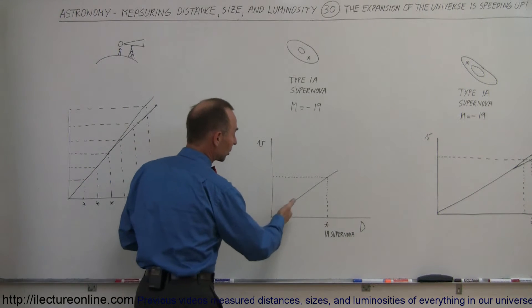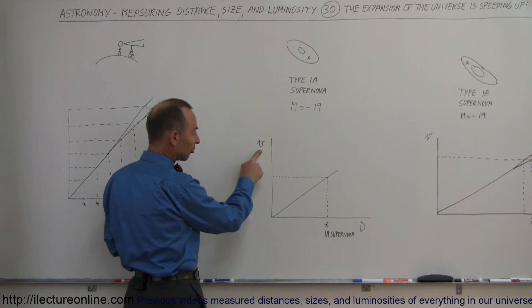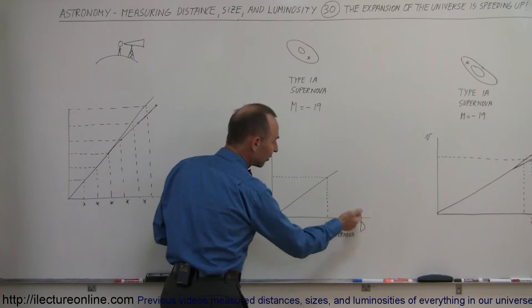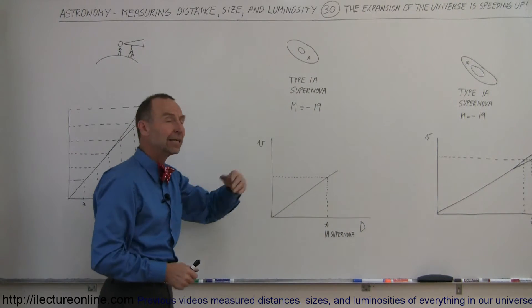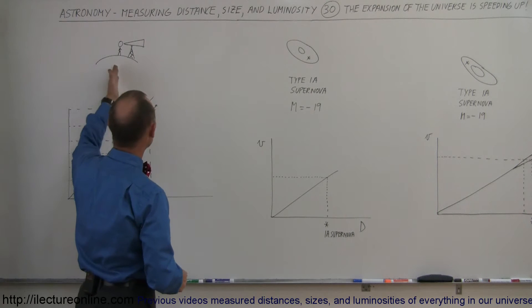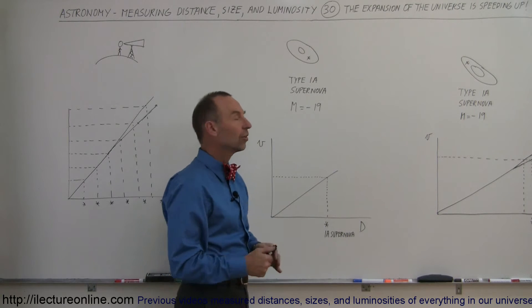So here we have the Hubble constant, which is equal to the slope of this line, which is a relationship between the recessional velocities and the distance away for the galaxy. For a particular galaxy that may be 30, 50, 80, 100 million light-years away, we take a look at it, we determine the recessional velocity, we can then figure out the distance.